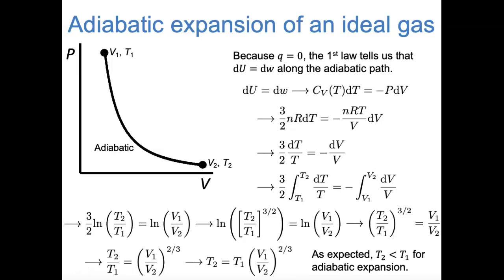We expected the temperature to go down in the adiabatic expansion. When the gas expands, V2 is larger than V1, so T2 = T1 times a number that's less than 1—confirming that T2 is less than T1, as we expected. I suggest taking time to make sure you followed all the steps of this derivation, because it's an important style. While this example was specific to a monatomic ideal gas, you could adapt this approach for a diatomic ideal gas by changing the heat capacity.